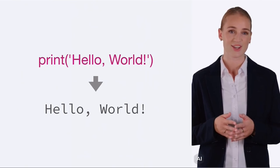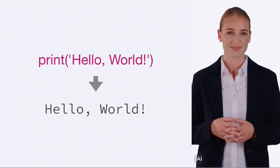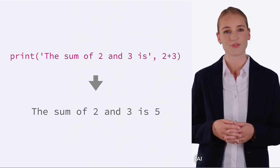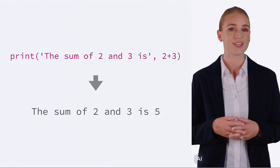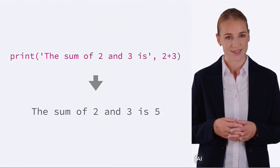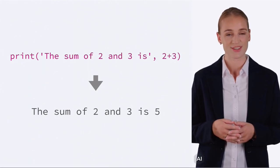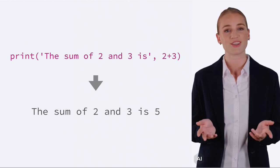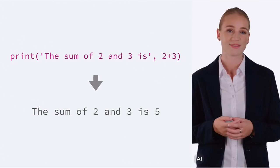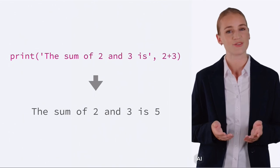But that's not all the print function can do. Print 'the sum of 2 and 3 is', 2 plus 3. Here, we're using print to display a string and the result of an arithmetic operation. Python evaluates the expression 2 plus 3 and then displays the result alongside our text.